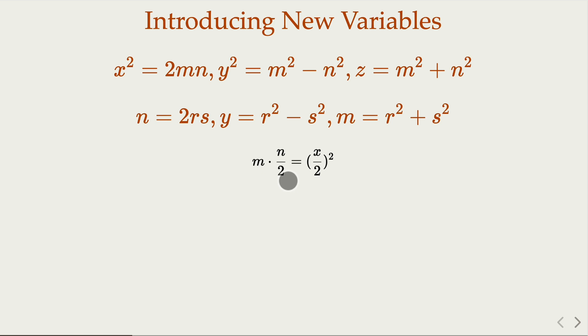So the product is a perfect square, which means the individual number is also a perfect square. That is, m is a perfect square, n over 2 is a perfect square. So r and s here is equal to n over 2 is an integer. Since n over 2 is a perfect square, r and s are relatively prime.